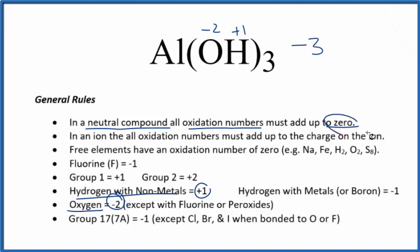The aluminum, for this to all add up to zero, has to be +3. So the oxidation number on the aluminum is +3.